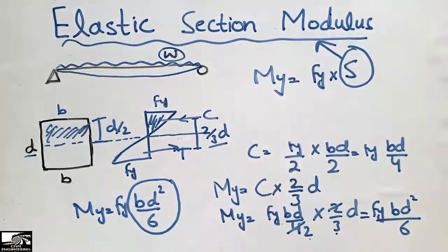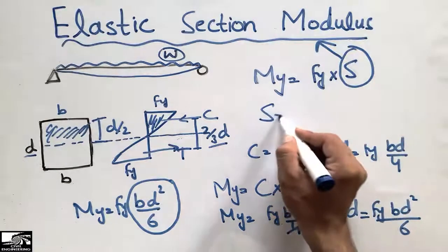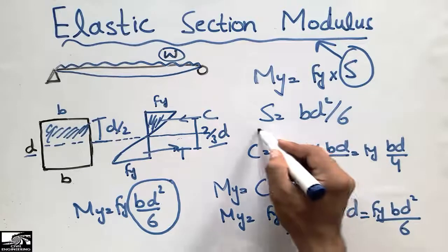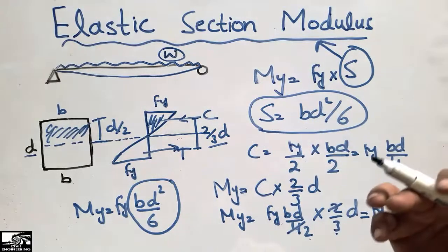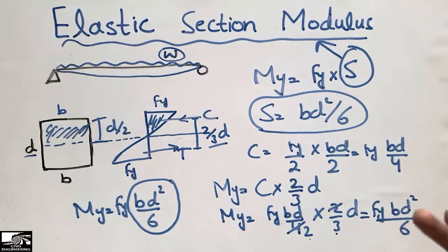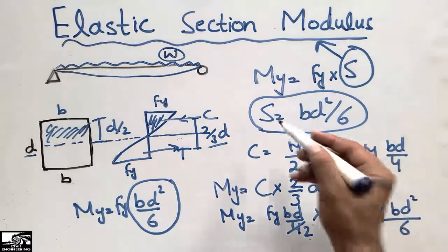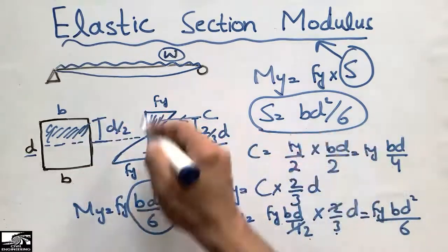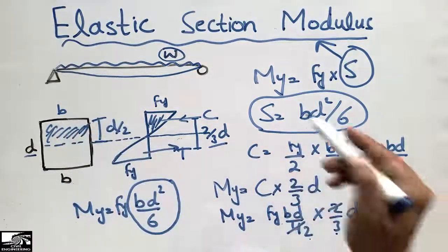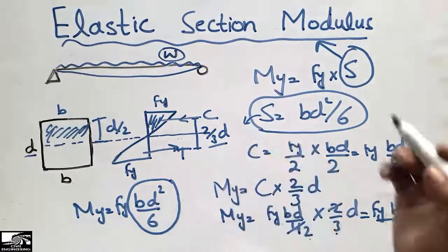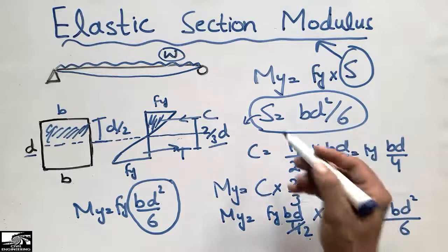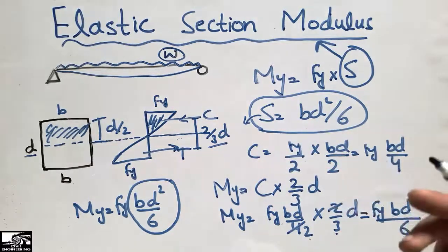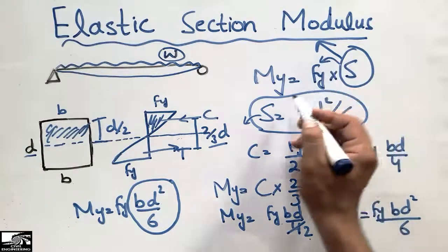The elastic section modulus of a rectangle is S = B·D²/6. This elastic section modulus is a geometric property — it does not represent the strength or deformation of the material, but rather a geometric property of the cross-section. For a triangular or T-shaped section, the elastic section modulus will be different from that of a rectangular section. It shows how much it helps increase the yield moment capacity when multiplied by the yield stress.